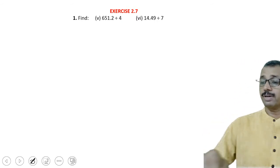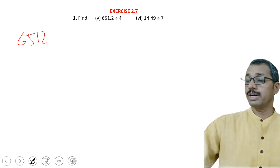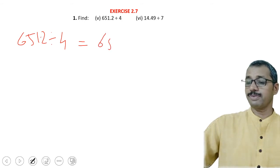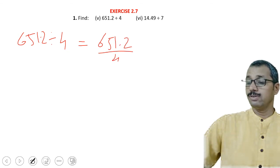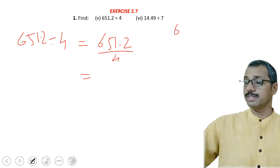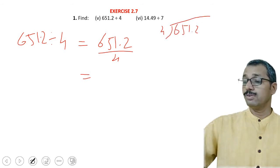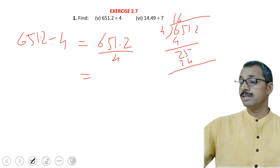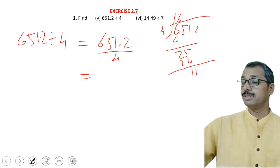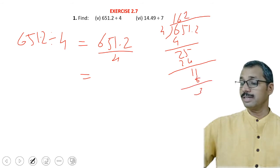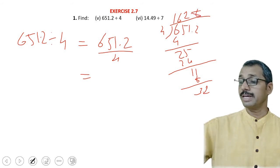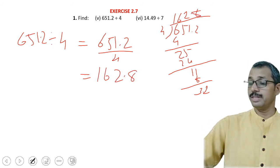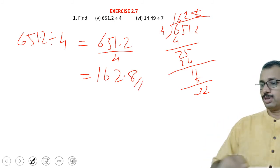The next example is 65.12 divided by 4. In 6, 4 ones are 4, remainder 2. Bring down 5, making 25: 4 sixes are 24, remainder 1. Bring down 1: 4 twos are 8, remainder 3. Place the decimal point. Bring down 2: 4 eights are 32. The answer is 16.28.